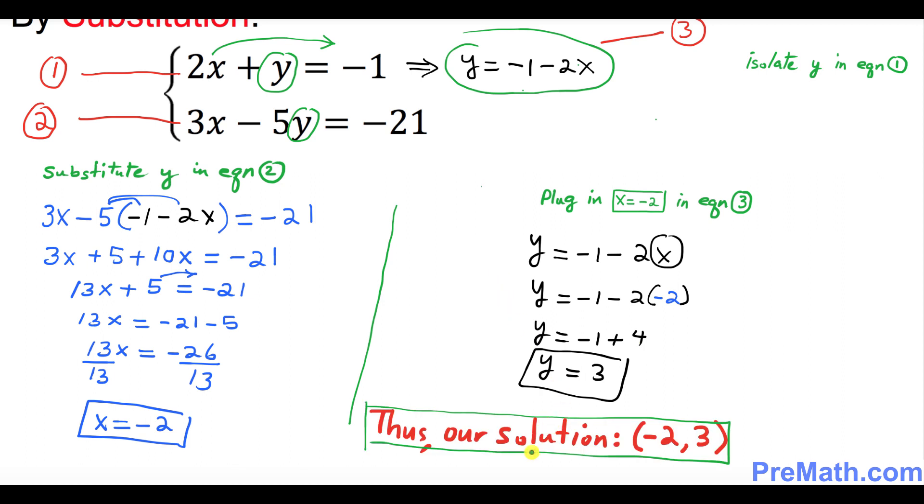Thus our solution turns out to be negative 2 comma 3. Negative 2 is your x value and 3 is your y value. Thanks for watching and please subscribe to my channel for more exciting videos.